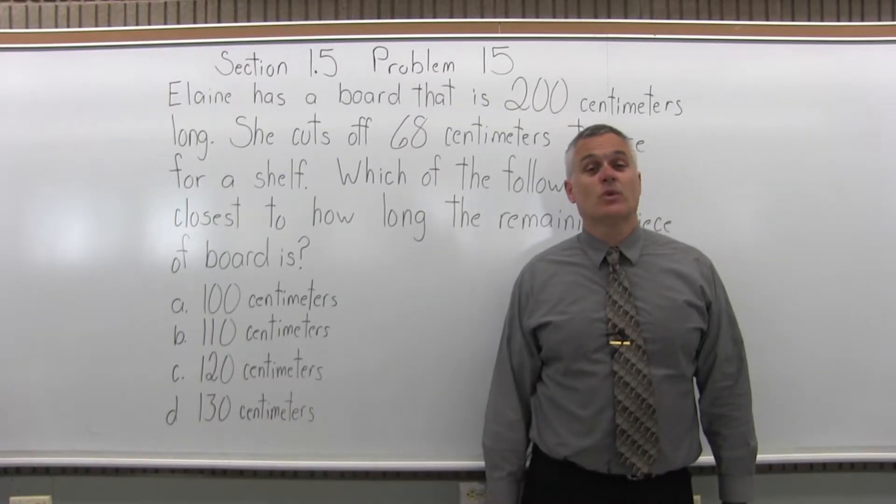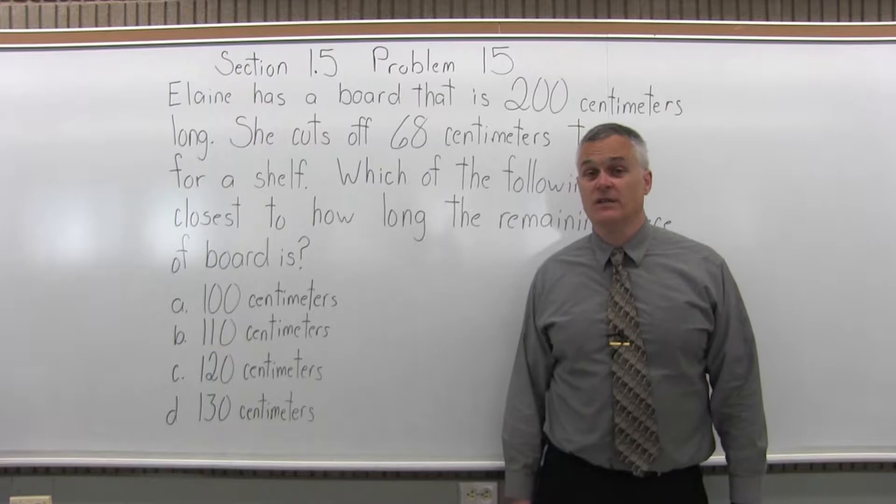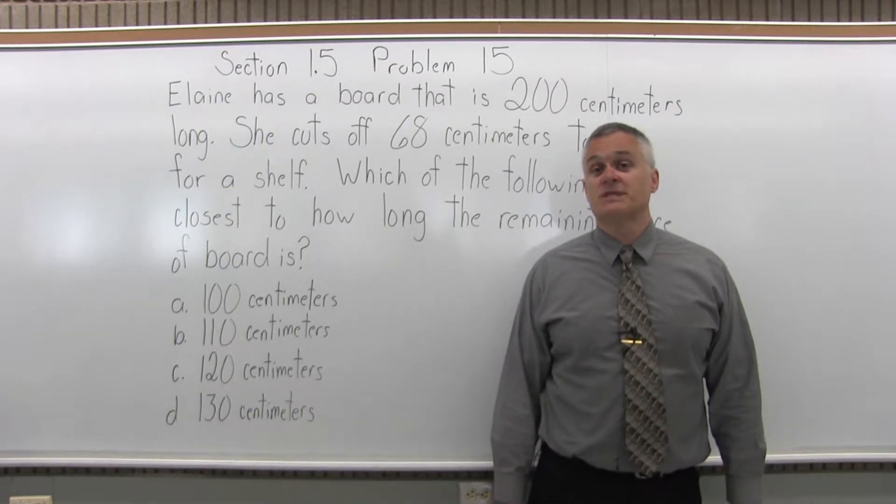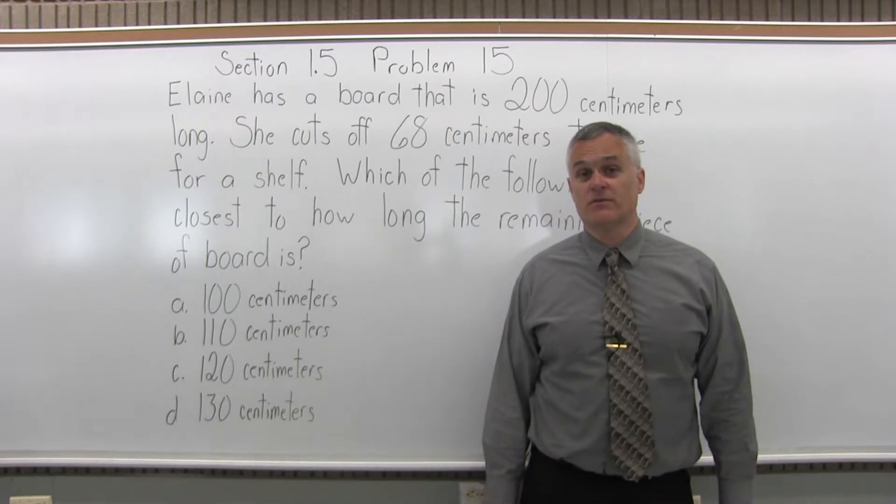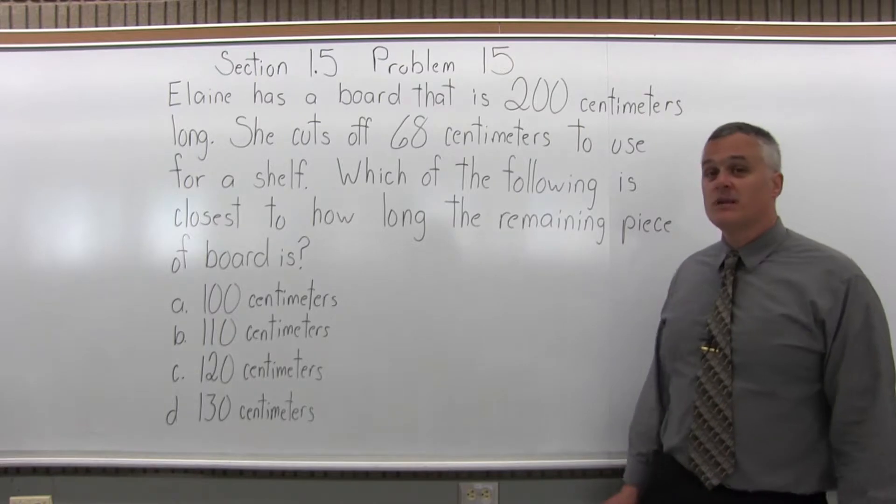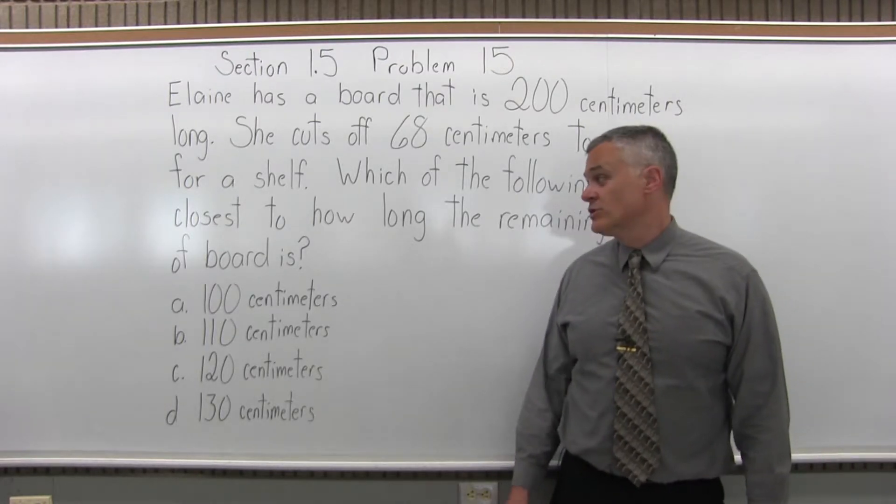This is Section 1.5, Problem 15. It says, Elaine has a board that is 200 centimeters long. She cuts off 68 centimeters to use for a shelf. Which of the following is closest to how long the remaining piece of board is? And we have four choices,